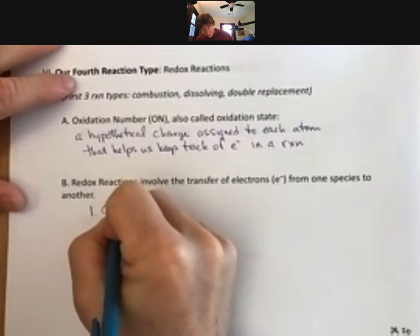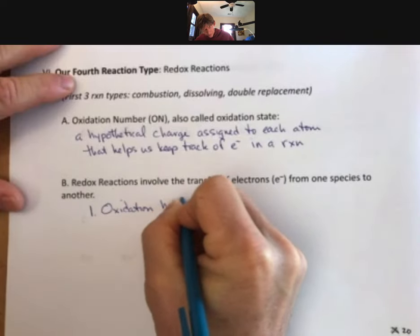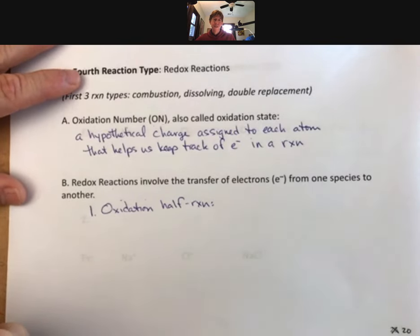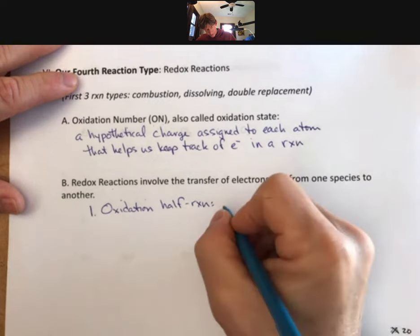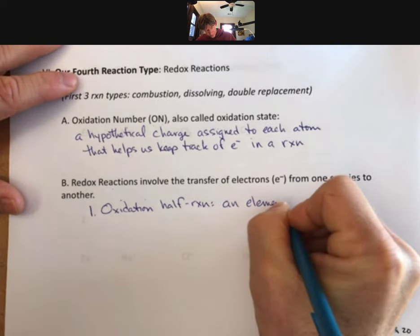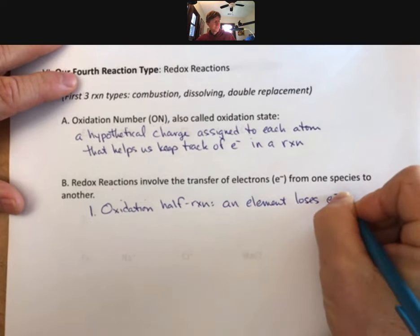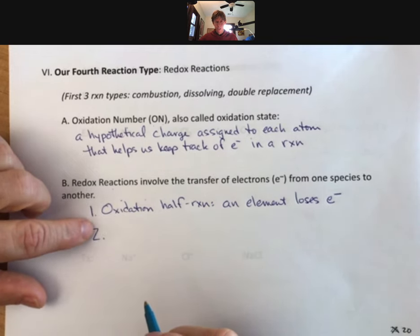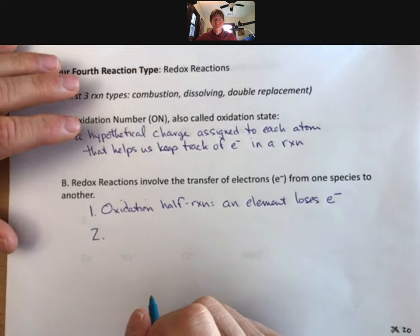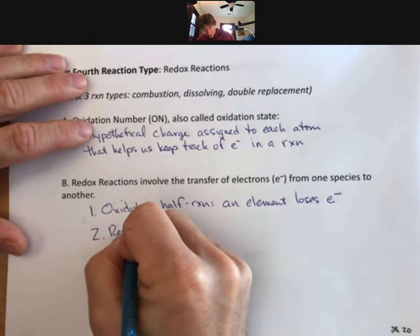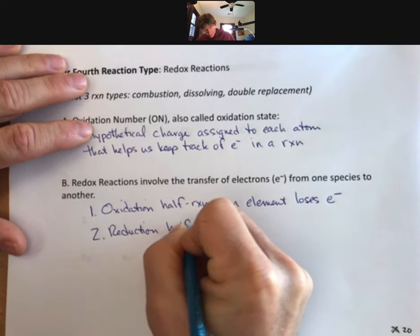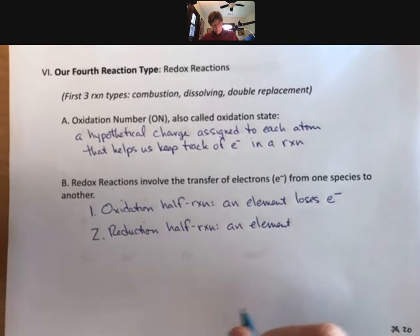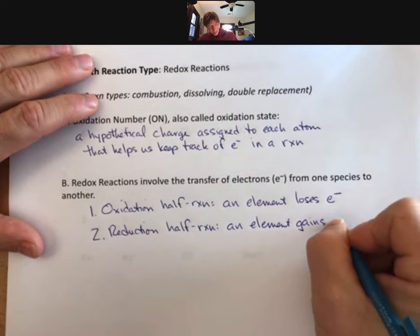the oxidation half-reaction. In the oxidation half-reaction, an element loses electrons. And in a reduction half-reaction, an element gains electrons.